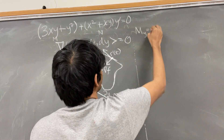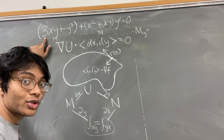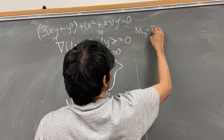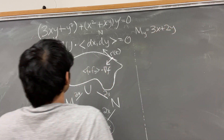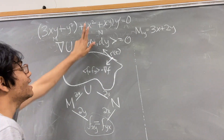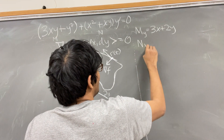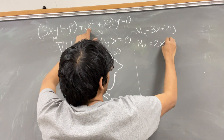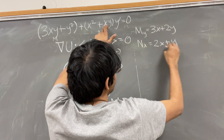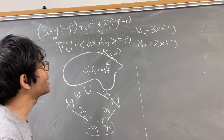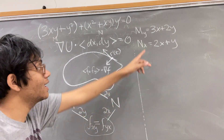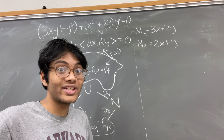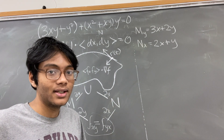M_y is the partial of M with respect to y, which gives us 3x plus 2y. The partial of N with respect to x gives us 2x plus y. Checking: 3x + 2y and 2x + y are definitely not the same, so we have to solve this a completely different way.